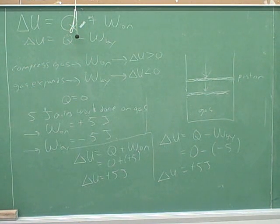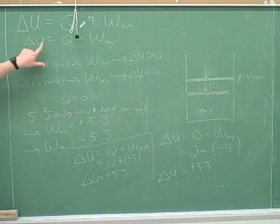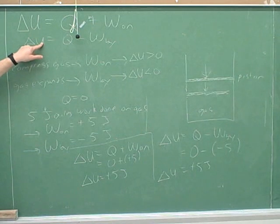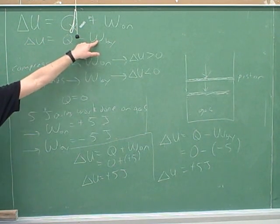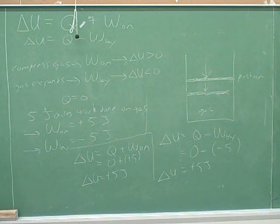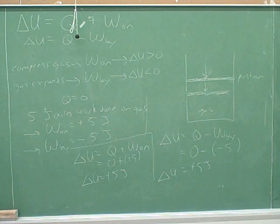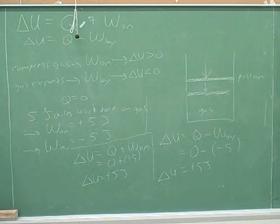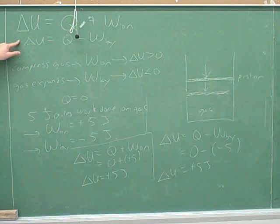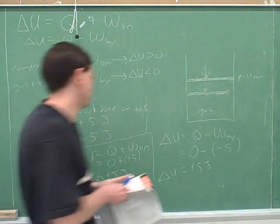This is probably how you saw it in class. In the textbook, they almost always use this equation — even when work is done on the gas, they still use it and just plug in a negative number for W by. You need to know that so you can follow what the textbook is saying. However, it's probably a lot easier to just pick the equation that makes more sense for the situation: use the work-on equation when work is done on the gas, and the work-by equation when work is done by the gas. But you'll see it both ways, so it's important to be comfortable with both.